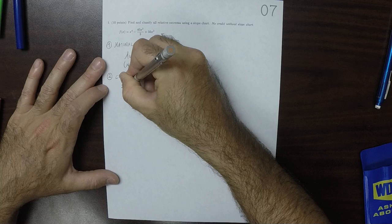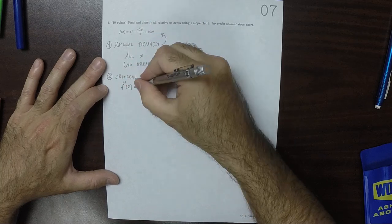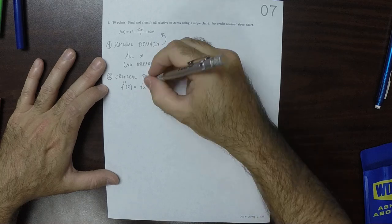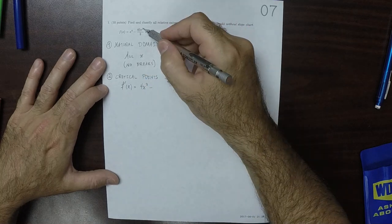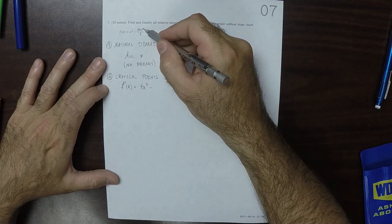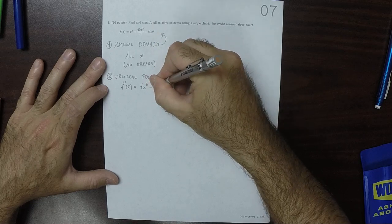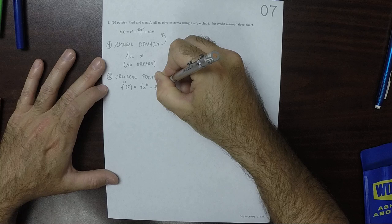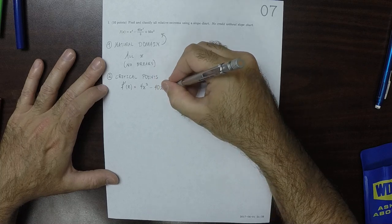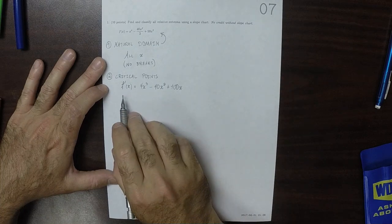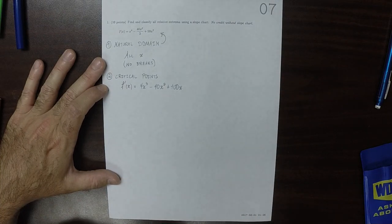So the derivative will be 4x³ minus, and then the derivative of x³ is 3x², and that 3 will cancel with that. So that'd be 40x², and then plus 100x. So now we're going to simplify this as much as possible.